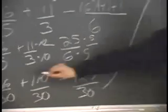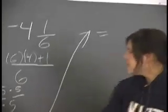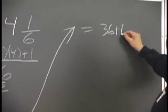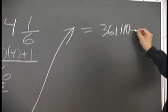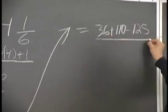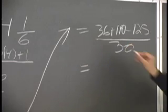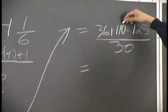And here we combine all the numerators onto one denominator, so we get 36 plus 110 minus 125 over 30. And that looks like 36 plus 110 is 146.